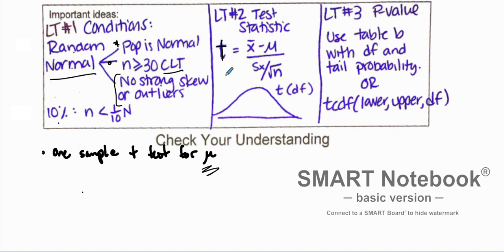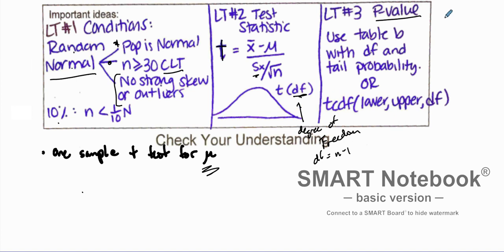From there we can find our test statistic. Our test statistic is t — the other ones we're using z; z is for proportions, means use t. We find our sample standard deviation, we have our t-distribution, and remember our degrees of freedom, which is n minus 1. We can then use our calculators or Table B to figure out what the tail probability is for our p-value, and then from our final step we can conclude.